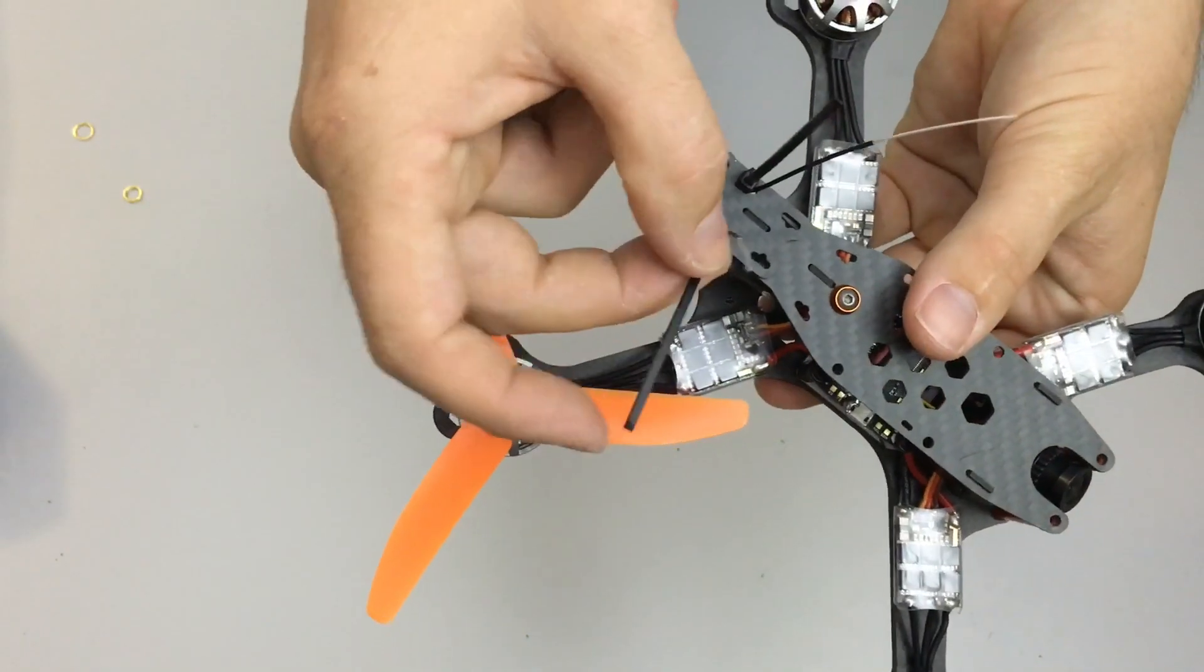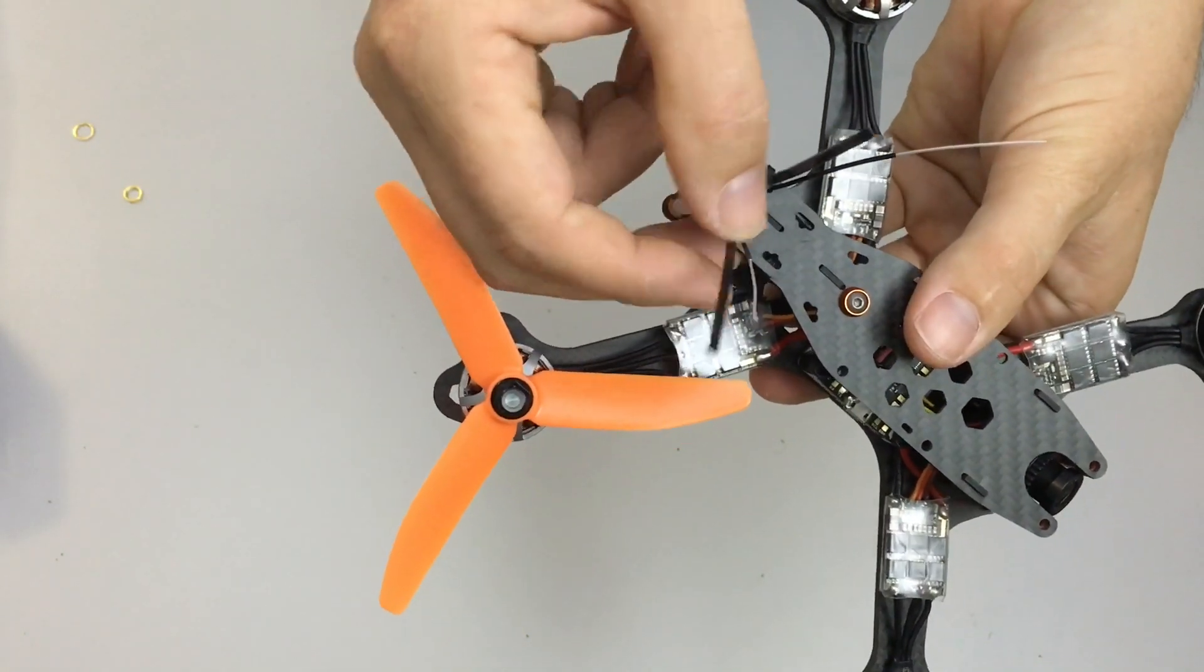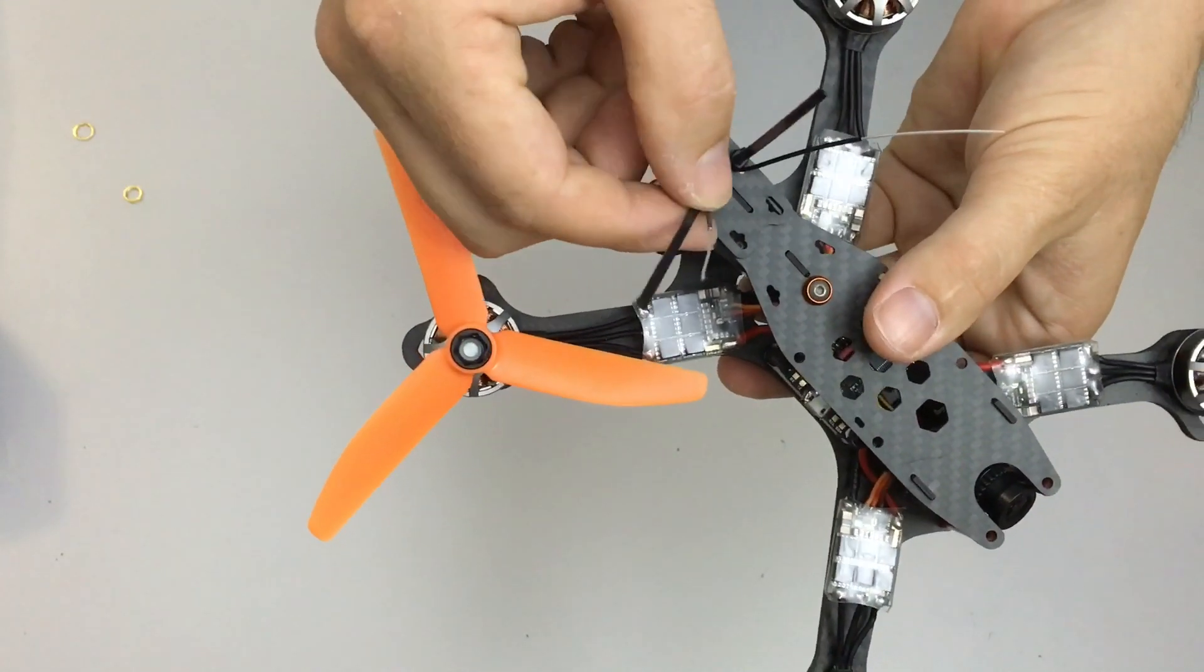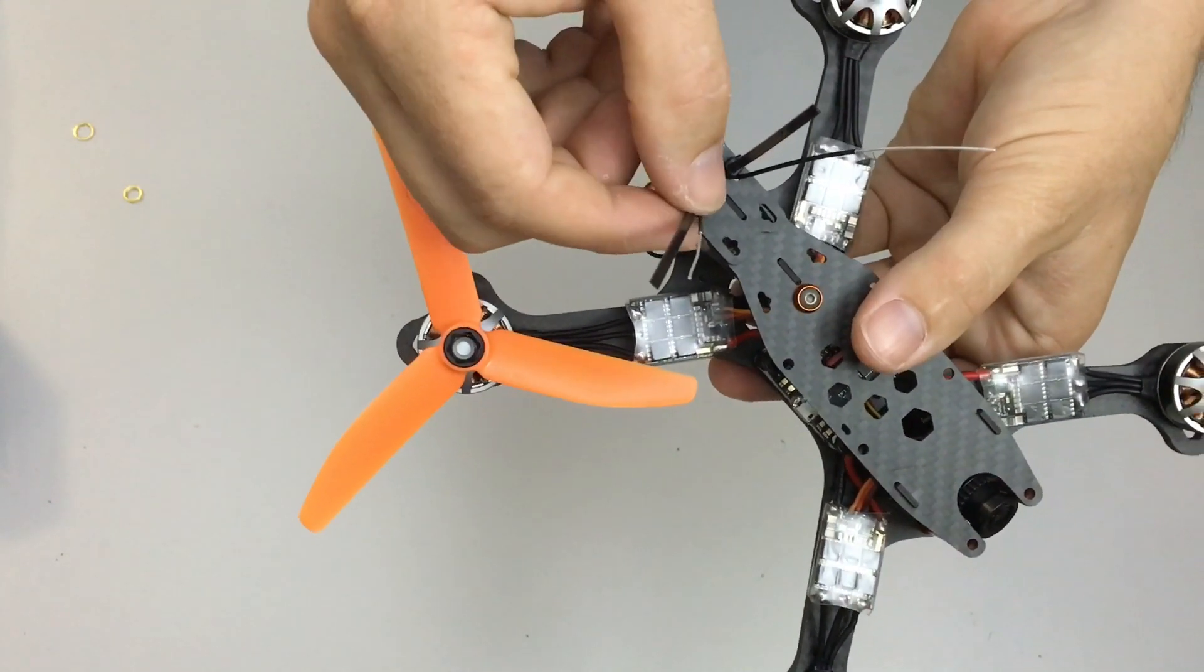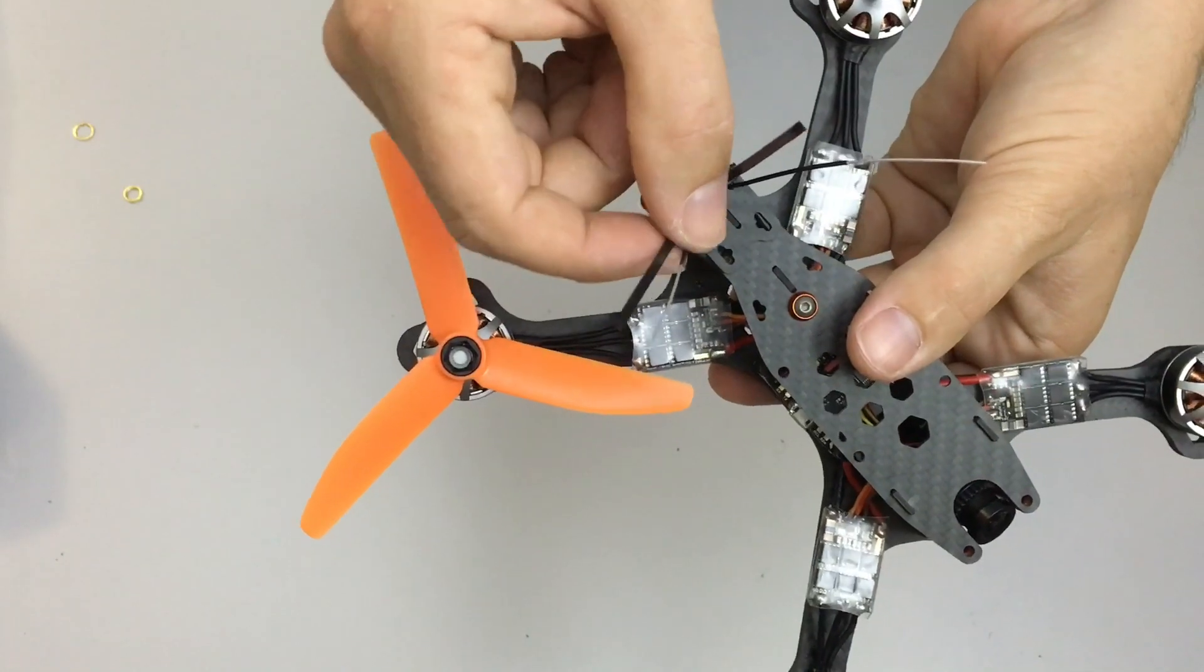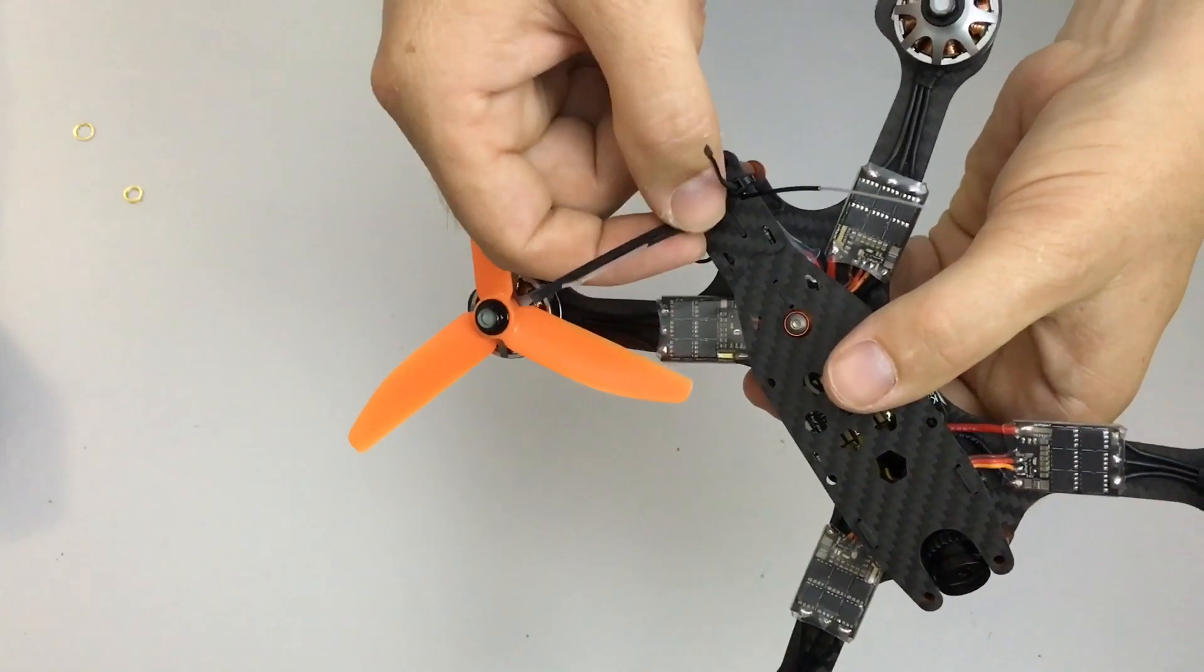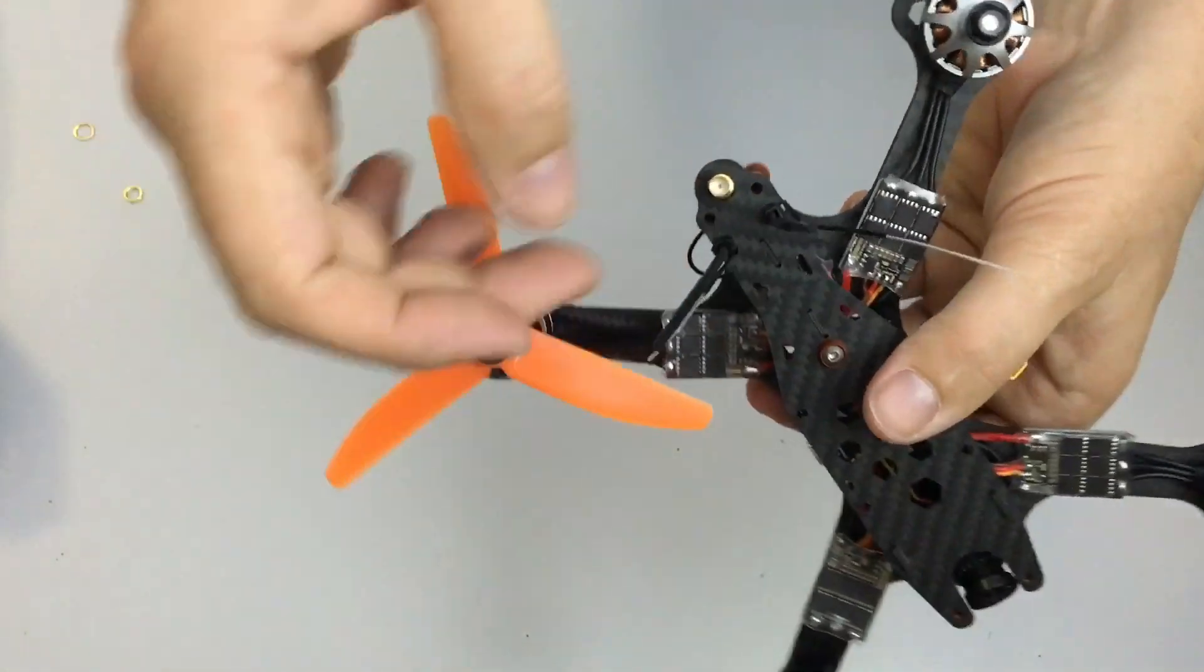I like to use these cable ties to support the receiver antenna wires. I'll put heat shrink around the two of them together.